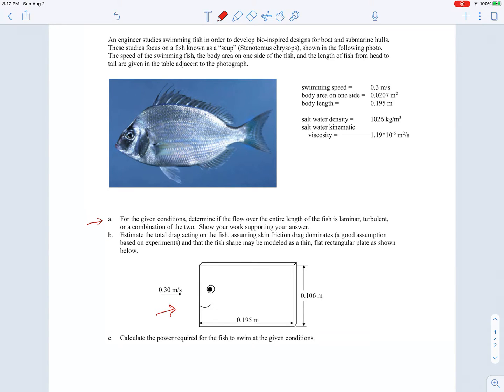Part C is to calculate the power required for the fish to swim at the given conditions. The given conditions are given right up here: we're told the swimming speed and the area on one side of the fish, the length of the fish, and this is a saltwater fish so we're given the conditions for salt water.